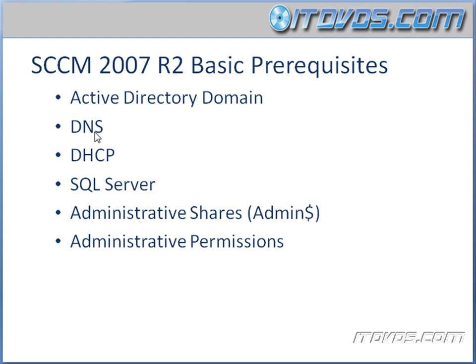You also need DNS, and normally if you've got an Active Directory domain, you've got DNS. You need a DHCP server, and preferably the DHCP server is not on the same server that we're going to be installing System Center Configuration Manager 2007 R2 on.